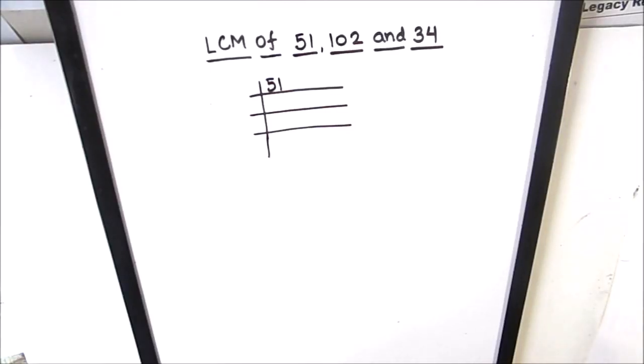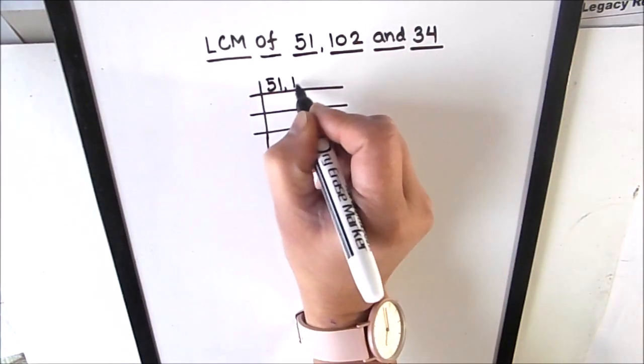Hello students, in this video we are going to learn how to find the LCM of 51, 102, and 34 using prime factorization method. In this method we divide numbers using prime numbers and find the factors of the number.